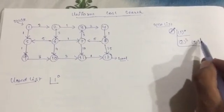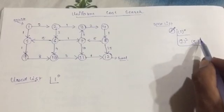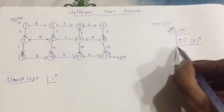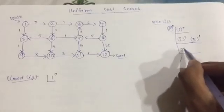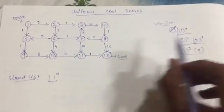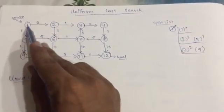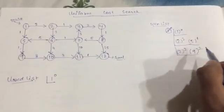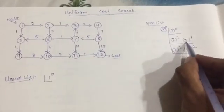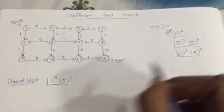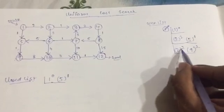From these two, which one has minimum distance? Node 5 with cost 1, so we will move from node 5 to another node. Calculate 1 plus 1, so from node 1 to node 9 the cost is 2. As you have moved from node 5, include it in the closed list.